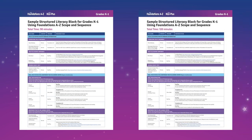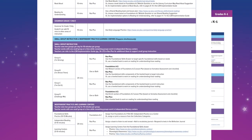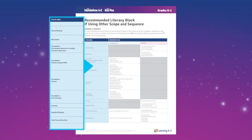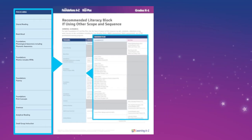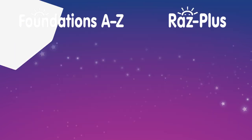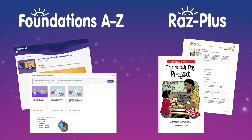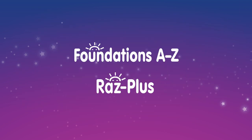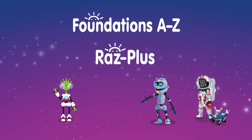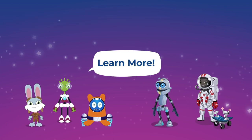This sample structured literacy block uses the Foundations A-Z scope and sequence. We also have a recommended literacy block for educators who want to blend another scope and sequence with Foundations A-Z and RAS Plus resources. The powerful duo combines the foundational skills lesson plans and comprehension resources you need to support all students where they need it most. Experience the full power of this duo and build complete literacy proficiency in your classroom. Learn more today.